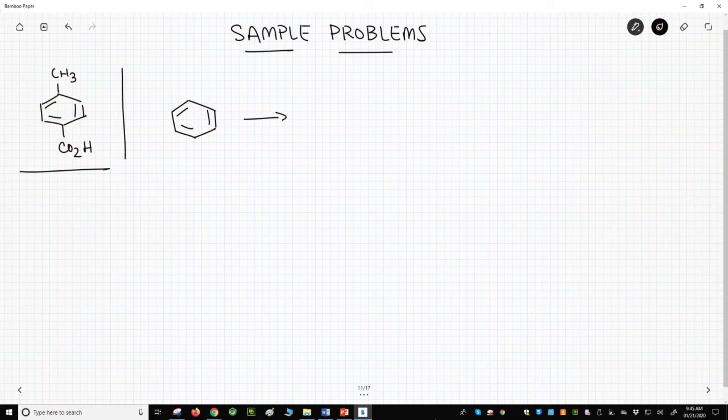Start with benzene and perform a Friedel-Crafts alkylation with chloromethane. No problem. Now, how do we add the acid? One option is to add a nitrile and then hydrolyze it to a carboxylic acid. That approach requires the diazonium chemistry we learned in this playlist.